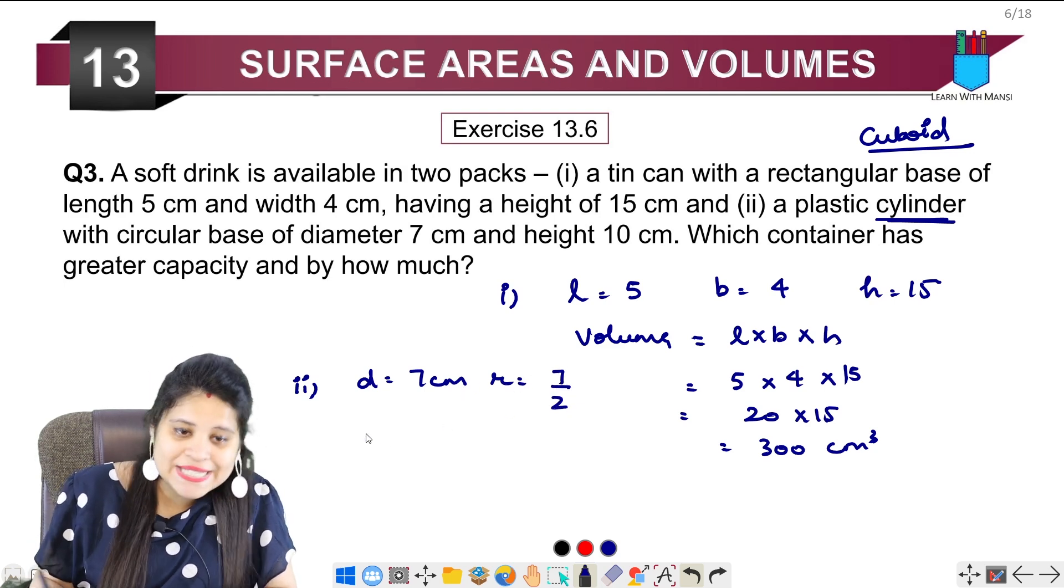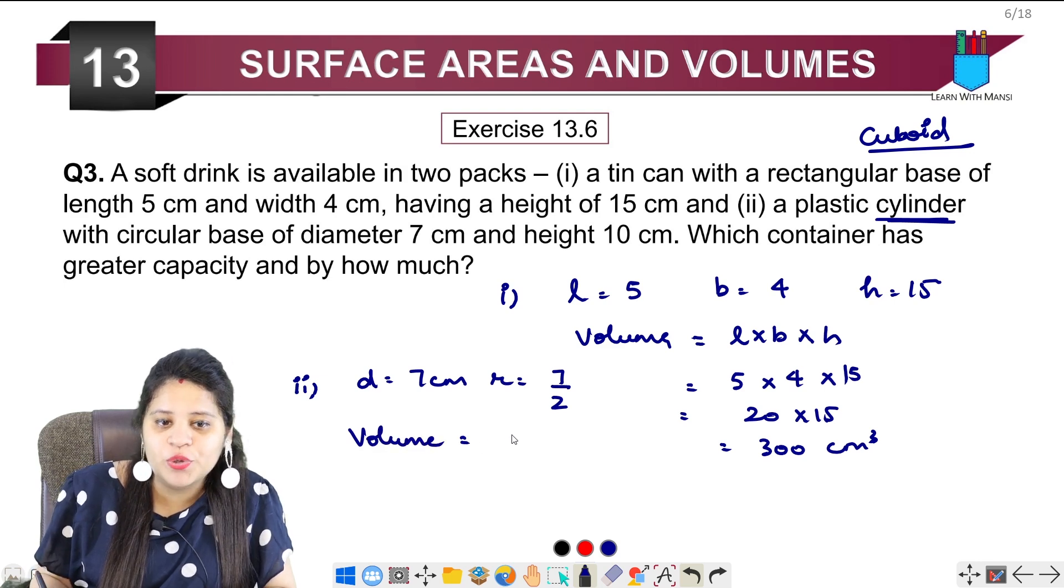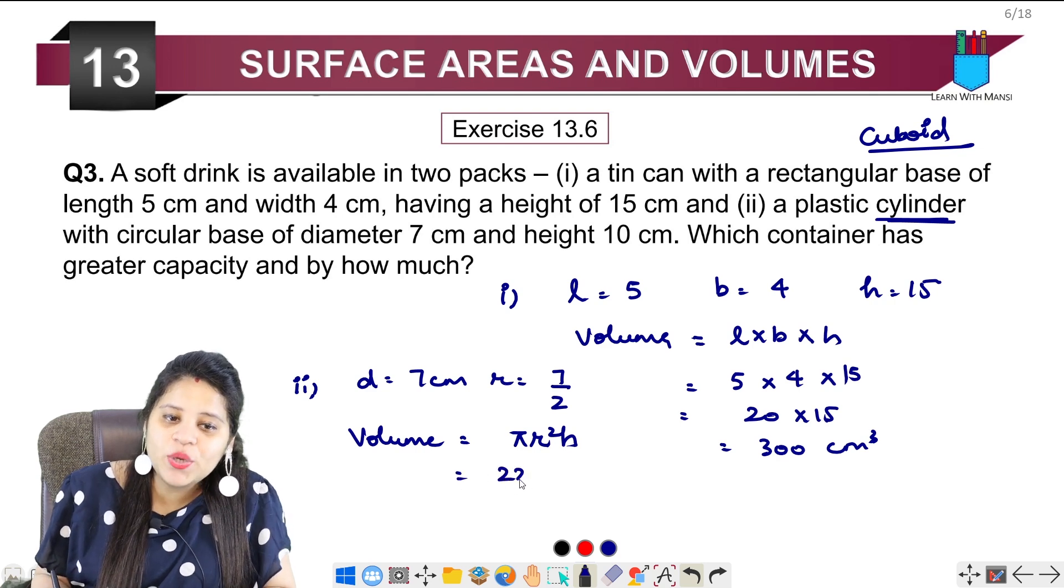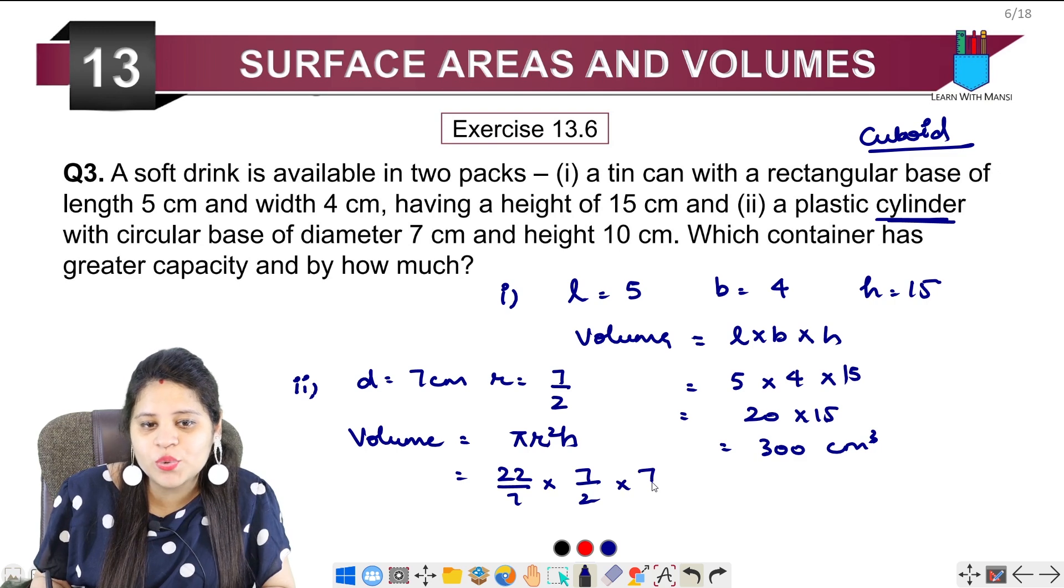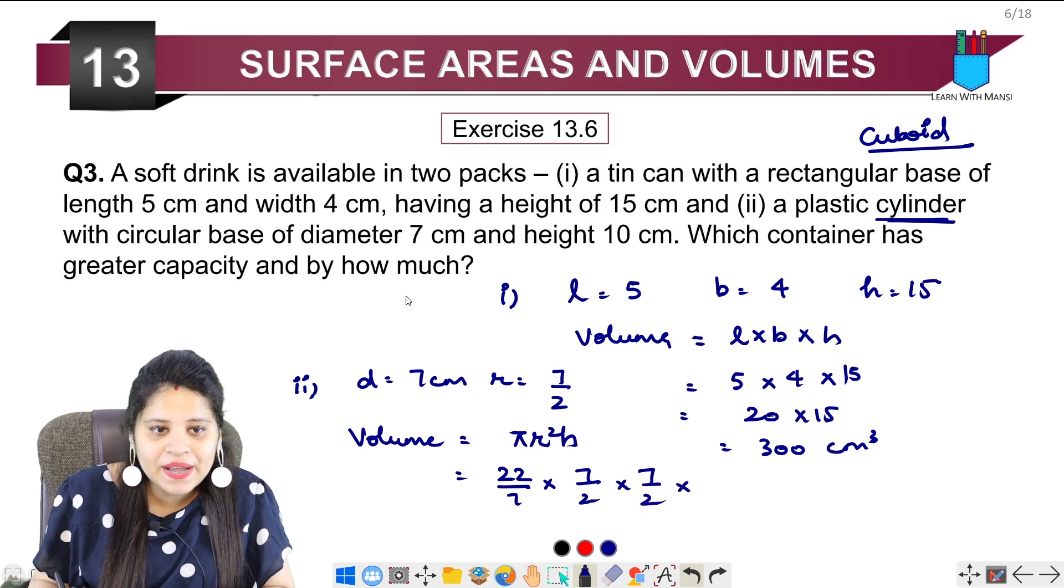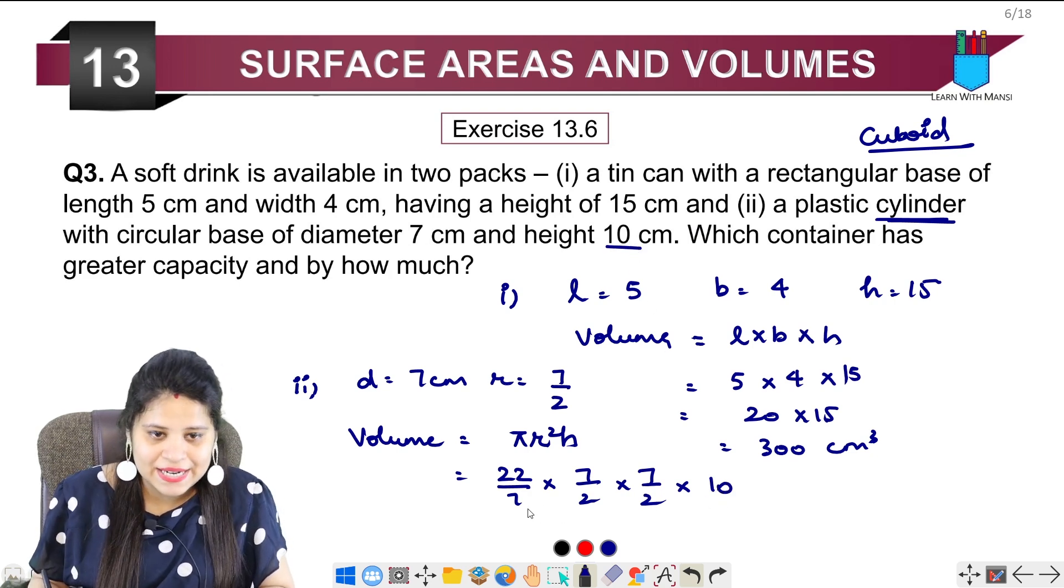For the second volume, we have πr²h. So it will be 22/7 times r squared, which is 7/2 times 7/2 times height. The volume will be 22/7 times 7/2 times 7/2 times 10.